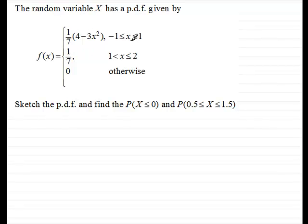For values of x between and including minus 1 to 1, we've got it defined as 1/7 of 4 minus 3x squared. And between 1 and 2 inclusive we've got 1/7 and it's 0 otherwise. What we've got to do is sketch the probability density function and find the probability that x is less than or equal to 0 and also the probability that x lies between 0.5 and 1.5.